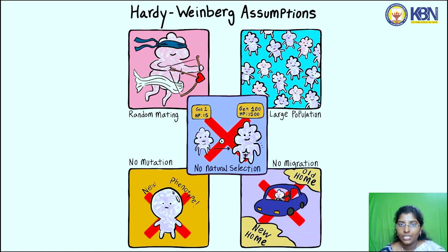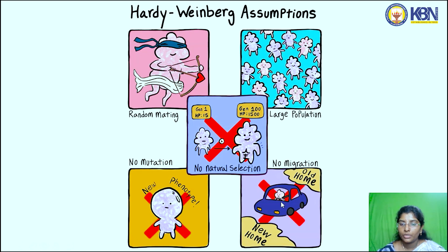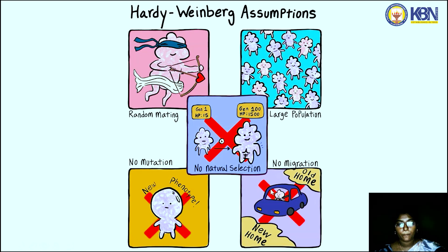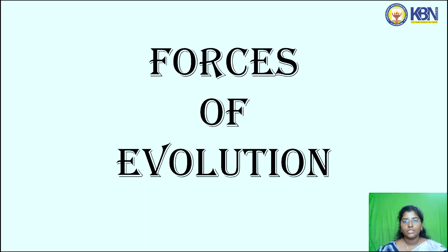Hardy-Weinberg equilibrium is based on five assumptions: first, random mating; second, large population size; third, no natural selection; fourth, no mutations in the population; and fifth, no migration.